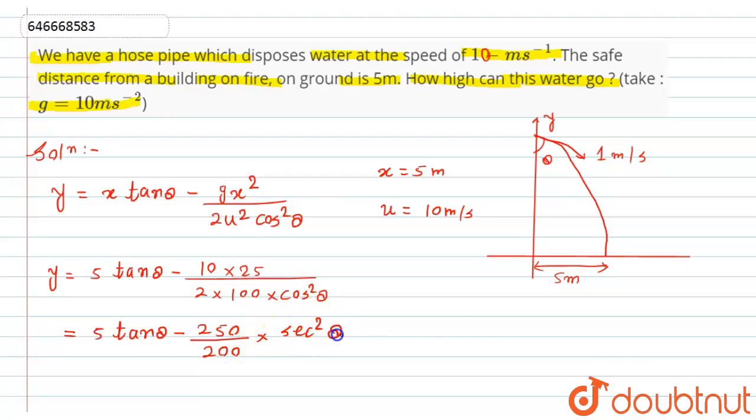In place of sec² θ, we substitute 1 + tan² θ. After putting this and simplifying, we get: 5 tan² θ - 20 tan θ